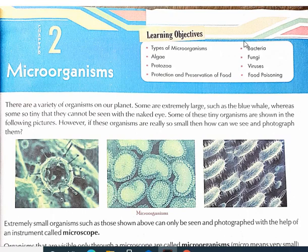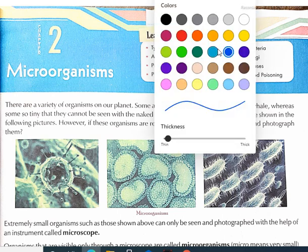There are a variety of organisms on our planet. On our planet there are many organisms. Some are very big, some are very small. Some are so small that we cannot see them with our naked eyes.